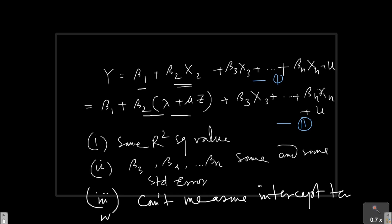Point number four: it will not be possible to estimate the value of beta 2 because what I'm going to get is beta 2 into mu, which is unknown. It will not be possible to estimate beta 2.